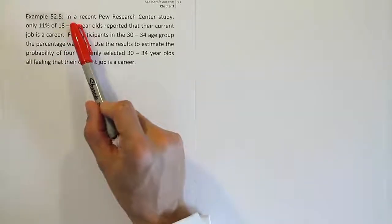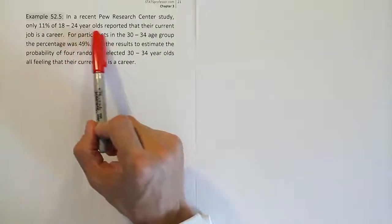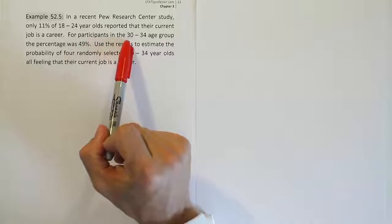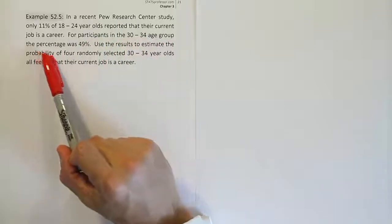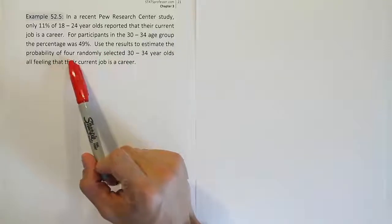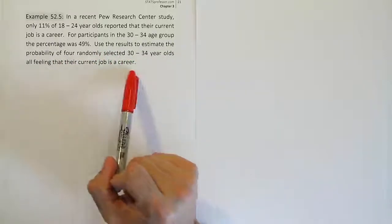Example 52.5. In a recent Pew Research Center study, only 11% of 18 to 24 year olds reported that their current job is a career. For participants in the 30 to 34 age group, the percentage was 49%. Use the results to estimate the probability of four randomly selected 30 to 34 year olds all feeling that their current job is a career.